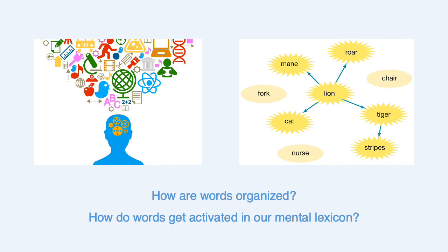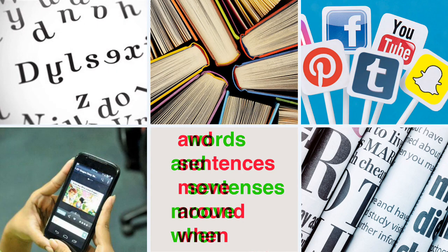We also look at how words are organized in our mental lexicon and how they relate to each other, and what happens when a word gets activated. Another aspect we look at is reading and writing — how do we read, what impact does the ability to read have on our daily life, and what happens when reading is a struggle?